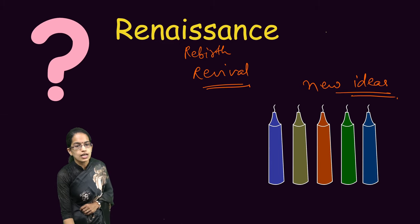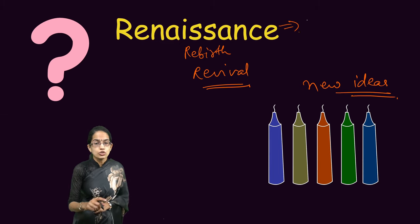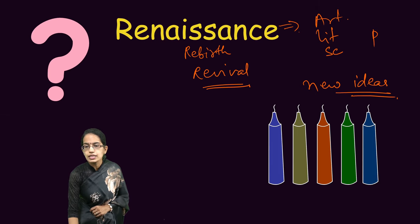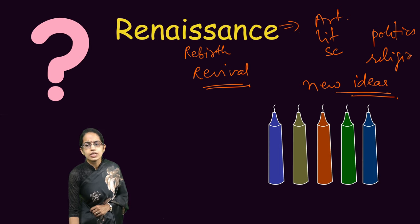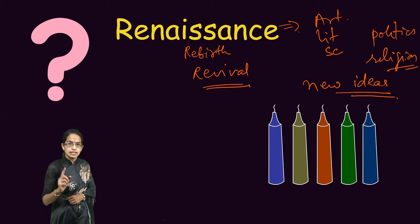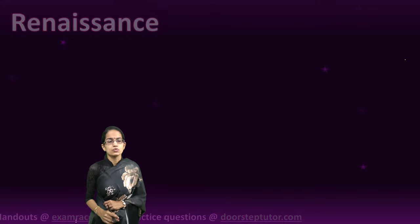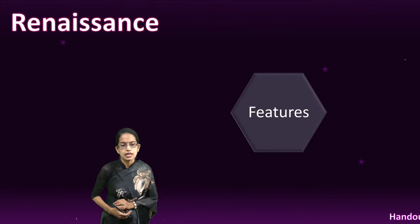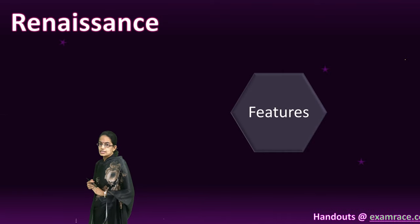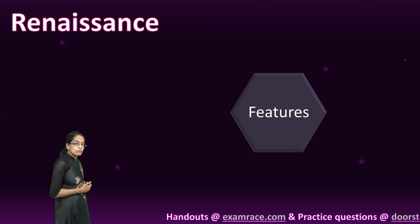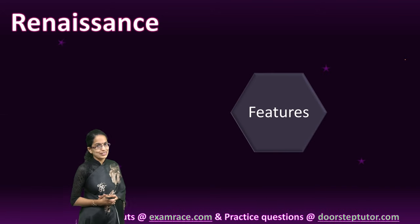This period of Renaissance saw changes in the field of art, literature, science, humanities, politics, religion, and all related fields were affected by Renaissance. The features of Renaissance are very important, and then we would focus on which factors actually led to Renaissance.